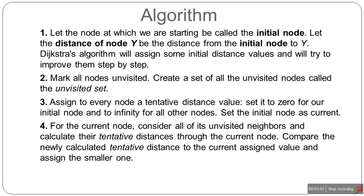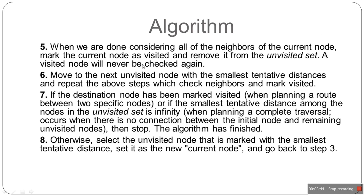Step four: for the current node, consider all its unvisited neighbors and calculate the tentative distances through the current node. Compare the newly calculated tentative distances to the currently assigned values and assign the smaller one. For example, if you previously had a distance of infinity but found the distance was 4 kilometers, then 4 is less than infinity, so you replace infinity with 4.